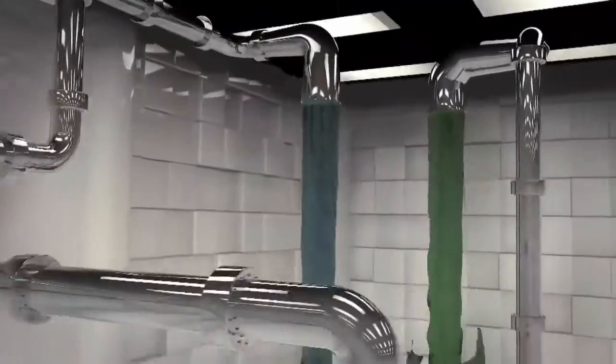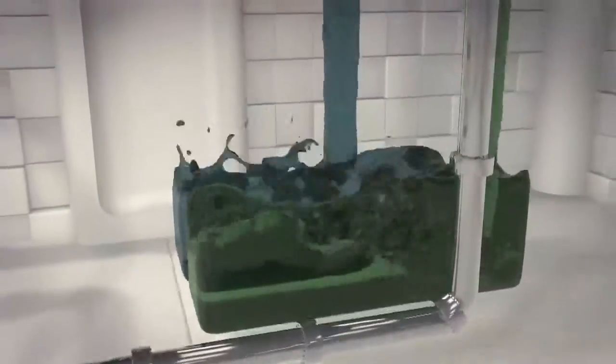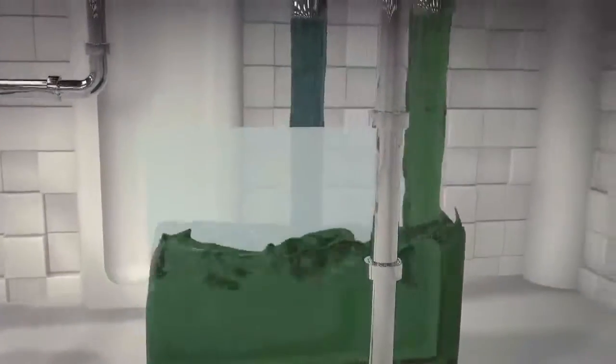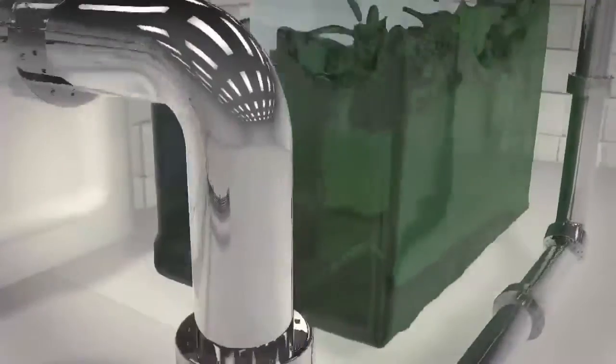Osmotic power stations recreate and harness this process by separating a tank of fresh water and a tank of salt water with a semi-permeable membrane.